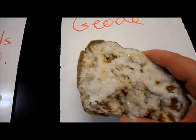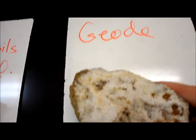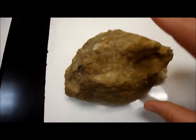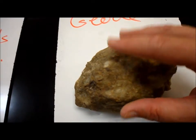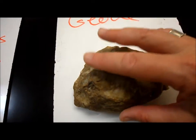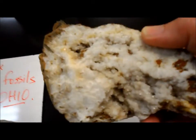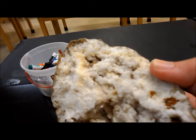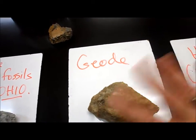Now this one is a sedimentary rock, but it's kind of unique because this is called a geode. A geode starts out as a ball of mud. Then slowly over time, what happens is these salts and minerals seep into the mud, and when they get inside they crystallize. So you can see these lovely crystals that form on the inside of the geode. It is also a sedimentary rock.